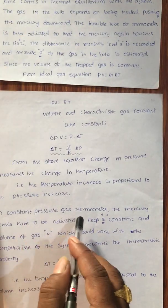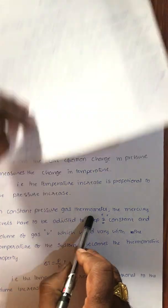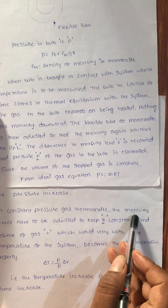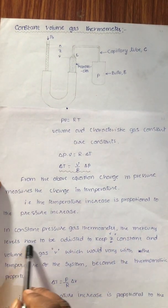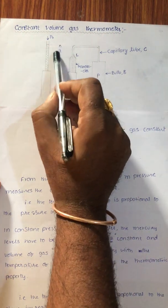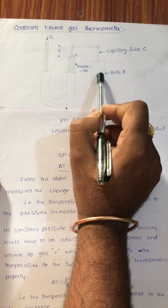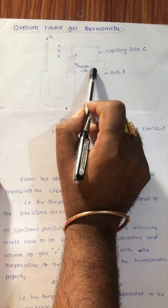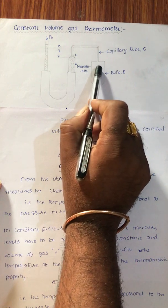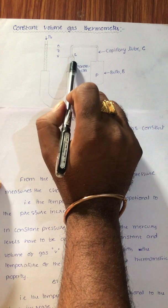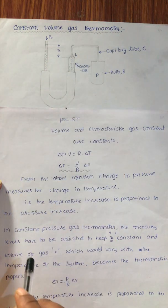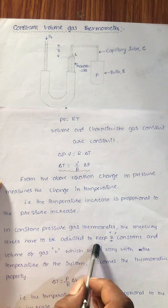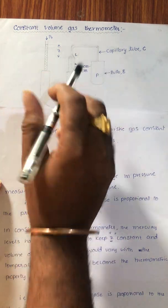Now let us switch to the constant pressure gas thermometer. In the constant pressure gas thermometer, the mercury level has to be adjusted to keep Z constant. If Z is constant, the pressure remains constant. Even though the volume is changing — when heated, the temperature increases and the gas expands so the mercury level changes — but the pressure is kept constant here.